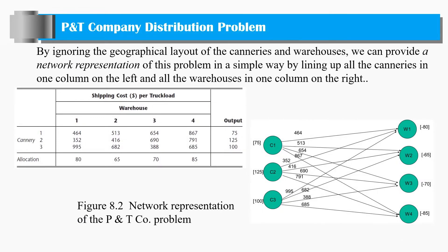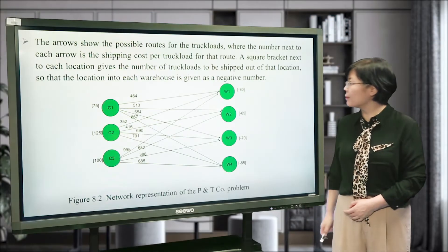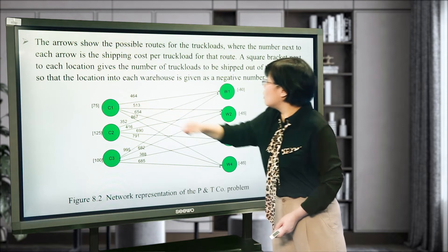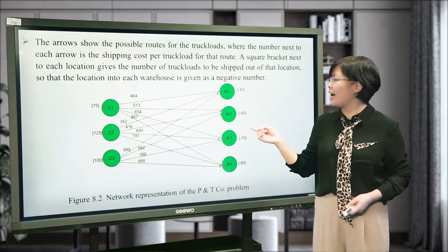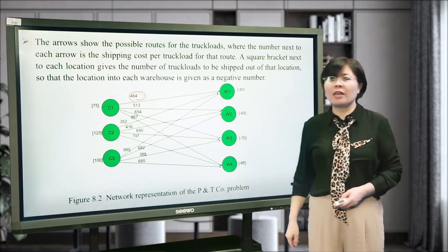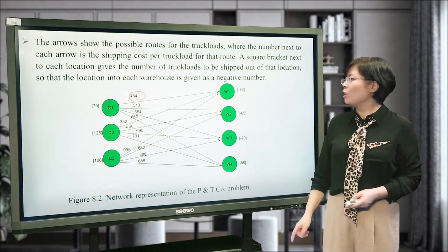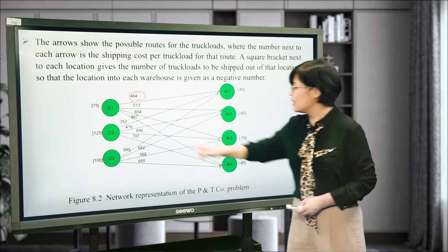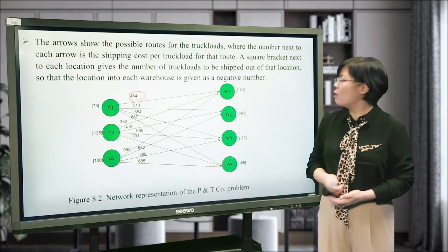By ignoring the geographic layout of the canneries and warehouses, we can provide a network representation of this problem, laying all the canneries on the left side with all the warehouses on the right. The arrows show the possible routes for the truckloads. The number next to each arrow is the shipping cost per truck — for example, from cannery C1 to warehouse one, the cost is 465.